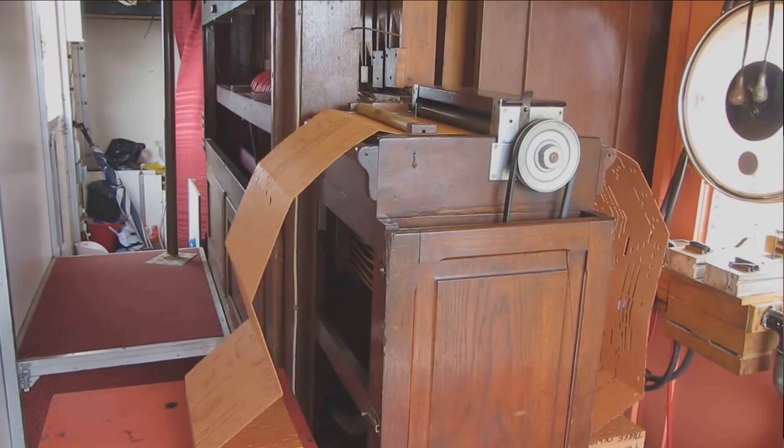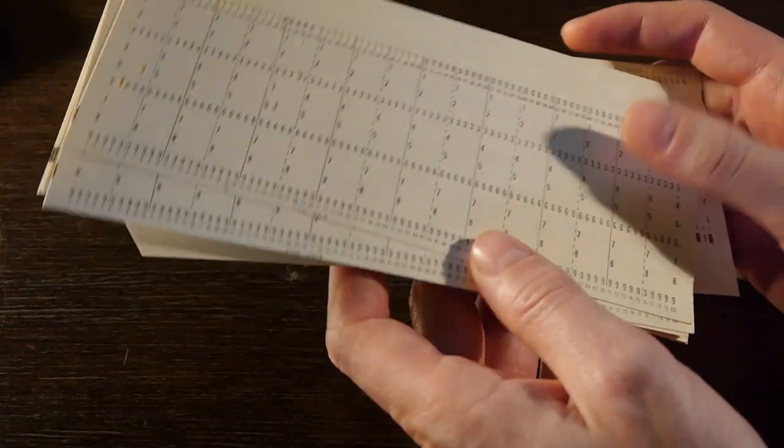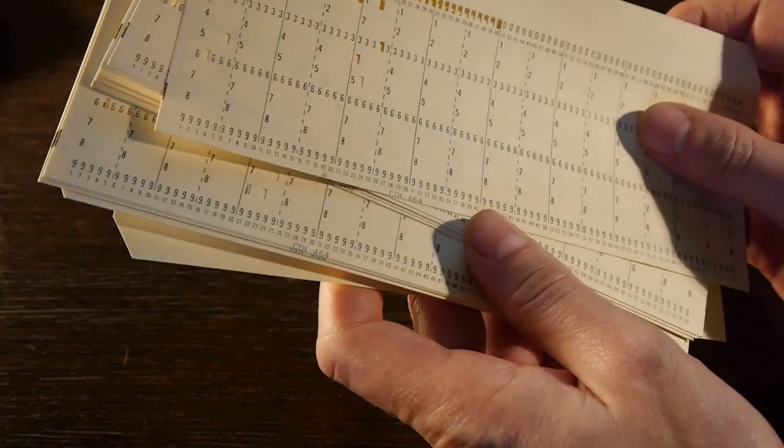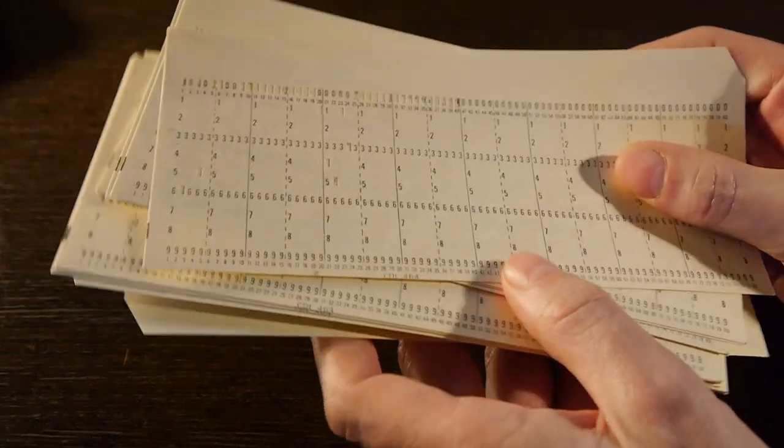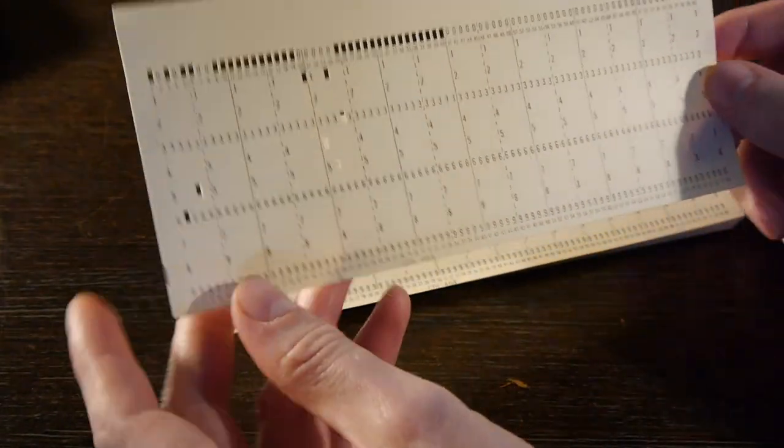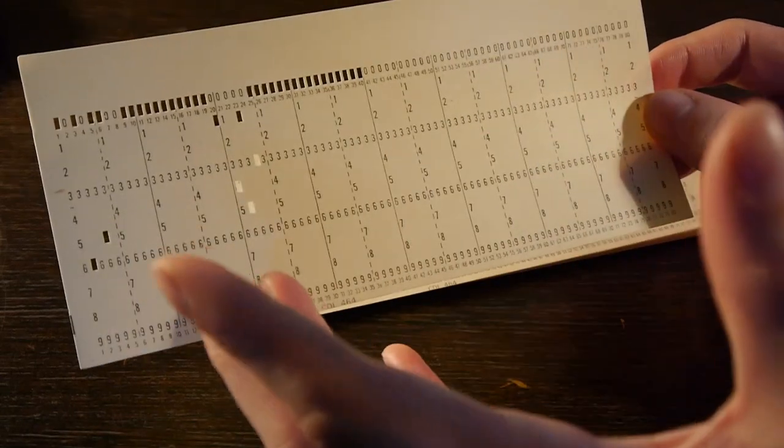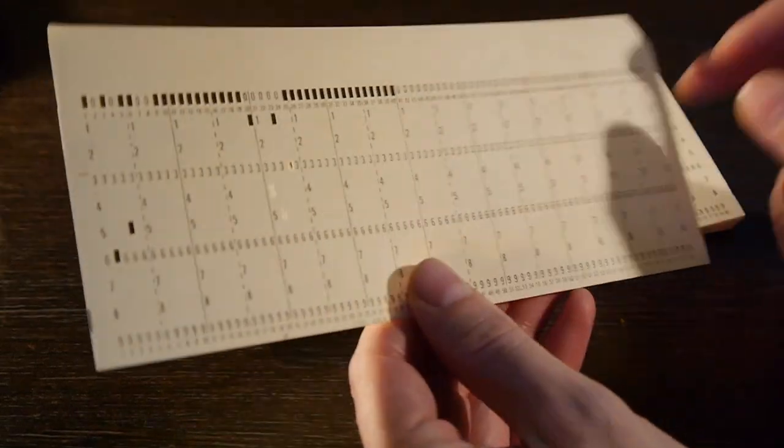But these are IBM standard style cards which were introduced in 1928, I believe, and they started out with this 80 column span, if you like. We have 10 rows here and then two value rows at the top.